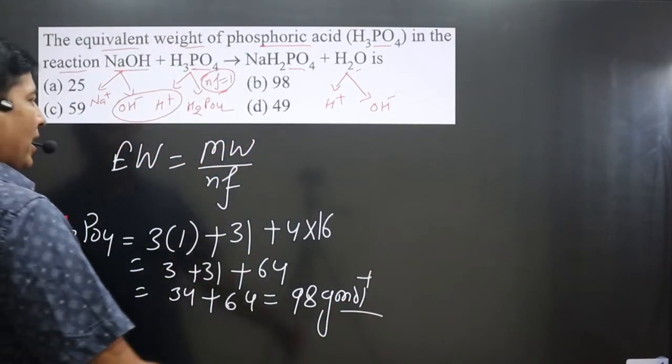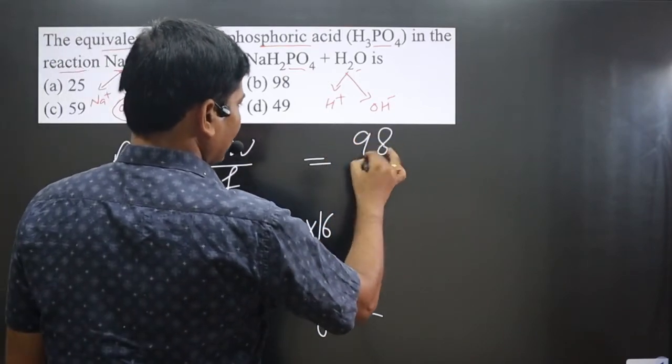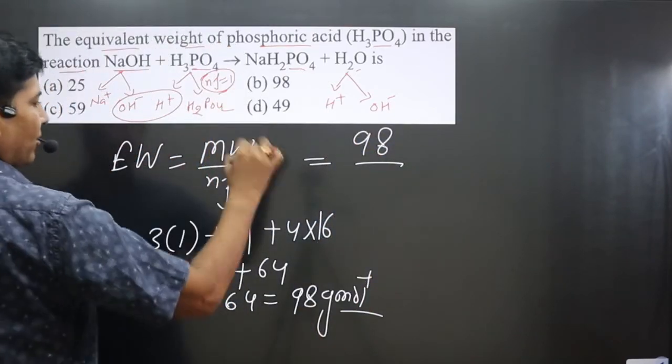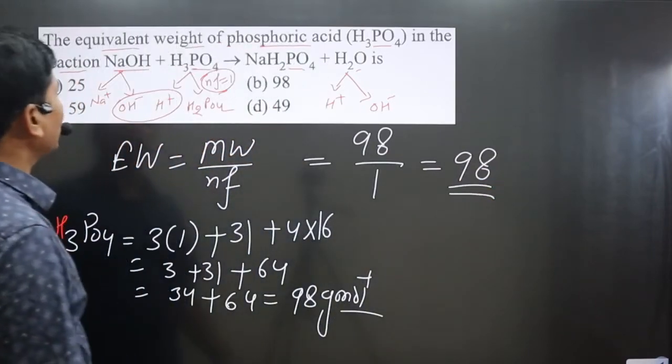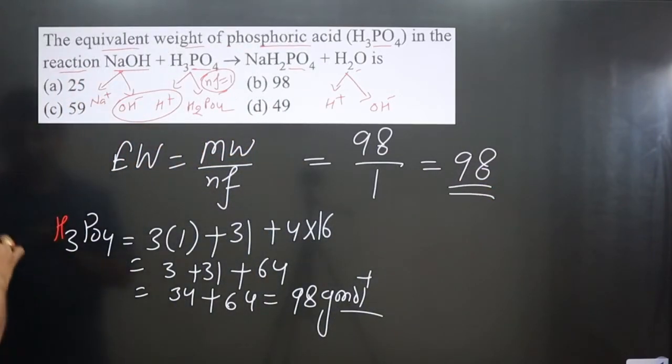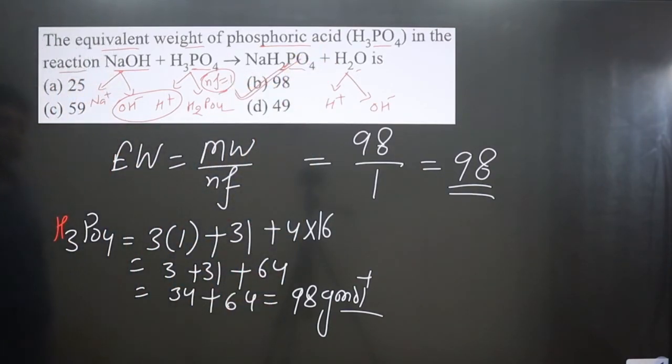Applying the formula: EW = 98/1 = 98. The equivalent weight of phosphoric acid is 98. Option B is correct.